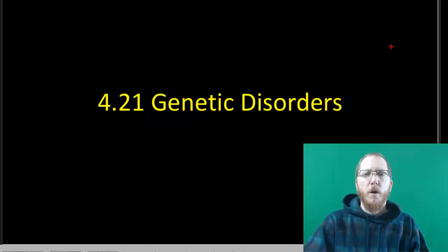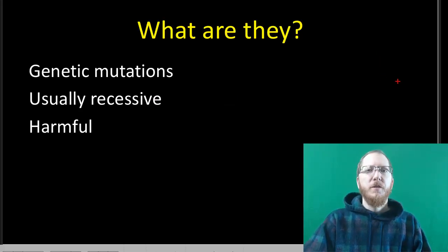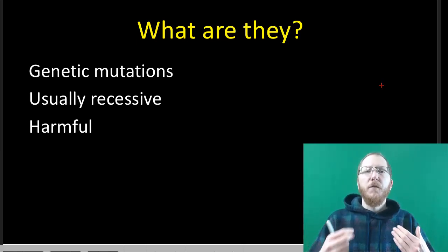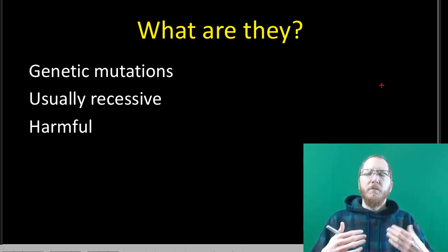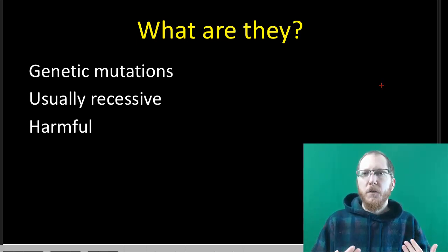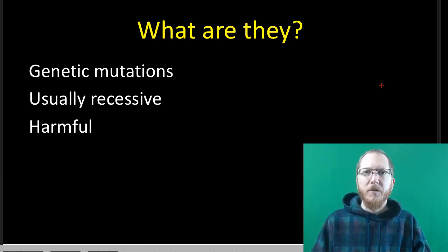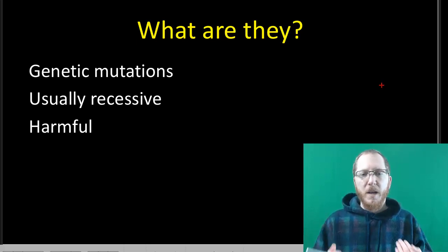Welcome to Section 4.21 on genetic disorders. Genetic disorders are problems that happen either in the chromosome amount you have or in the particular version of a gene that you have. These are universally going to be harmful — they're disorders that typically don't have a benefit, whereas some other traits could be beneficial if the environment shifts. Most of these will make you more unhealthy regardless of what's going on.